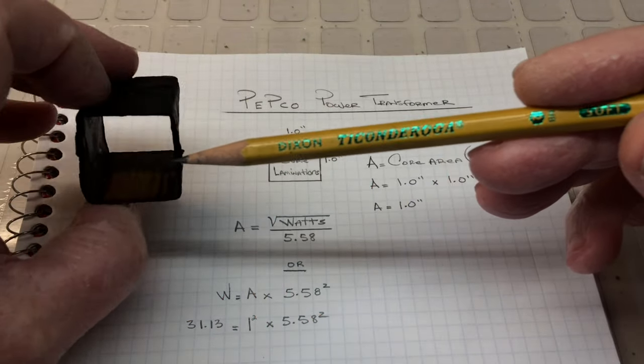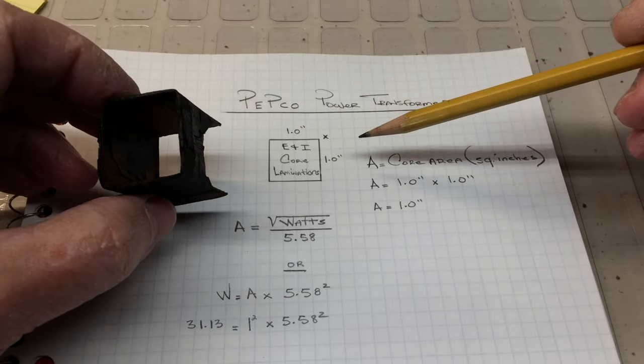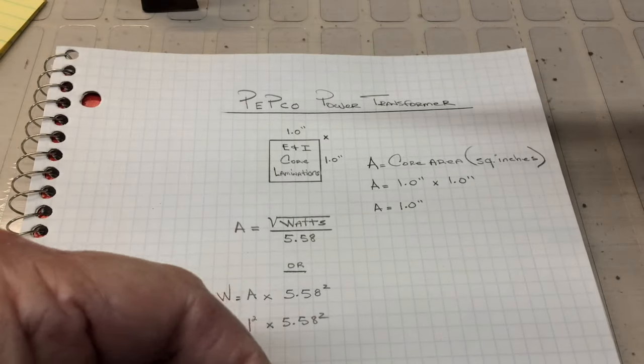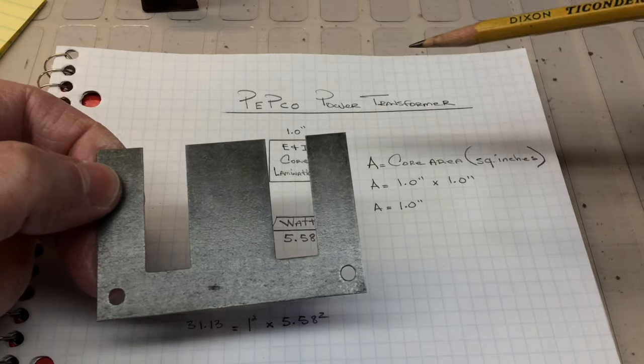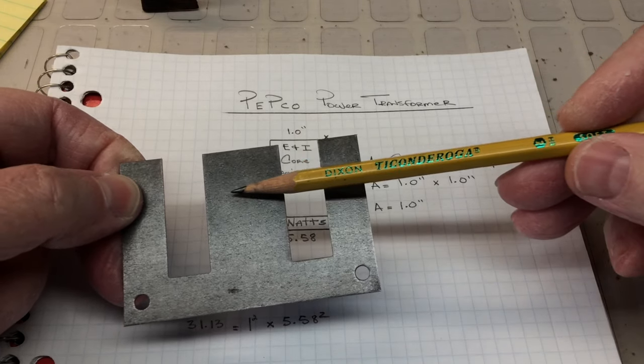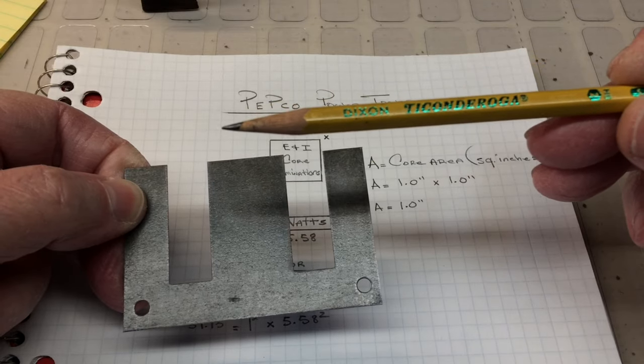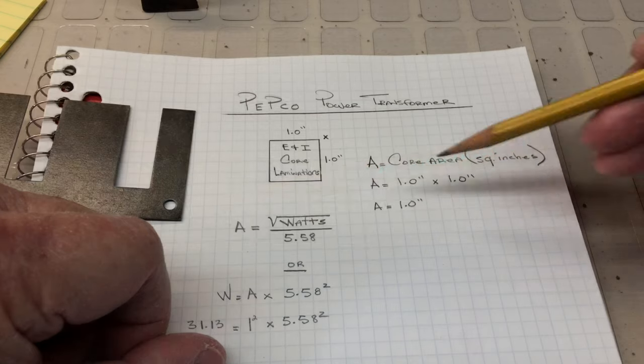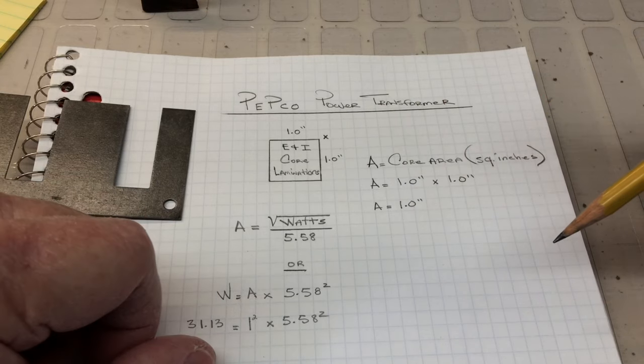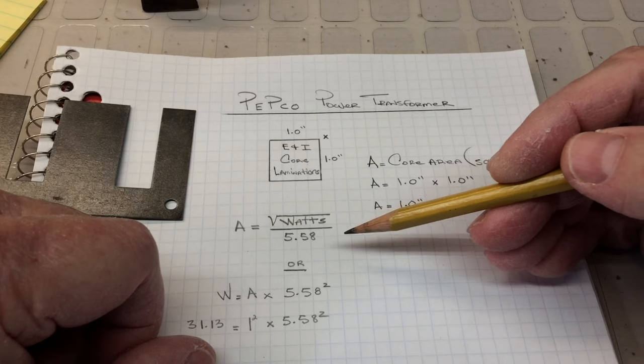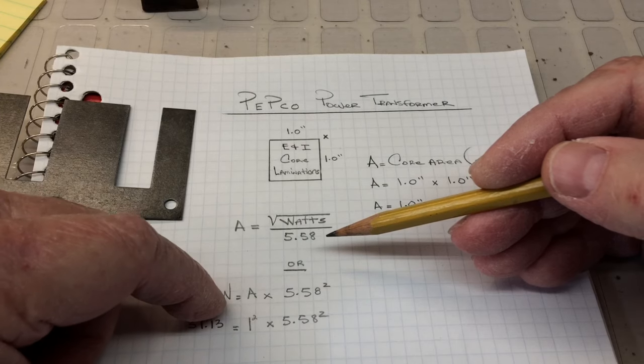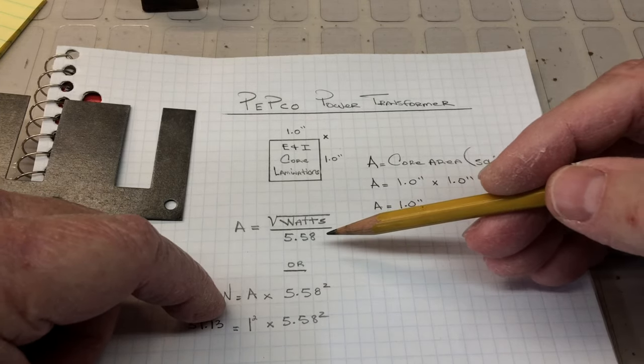Here's what's left of the bobbin itself and you can see I've jotted down the measurements. It's one inch by one inch and that can also be confirmed by the E pieces. Again this is one inch across and if I were to stack all the E pieces on top of each other and get the height, it's also one inch. So to calculate the core area in square inches is simply one inch times one inch equals one inch and you can see the standard calculation for computing watts or really volt amps according to another article that I've read. We'll expand more on that later.